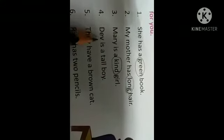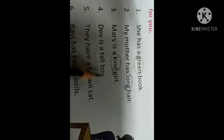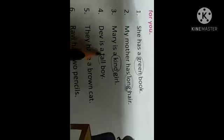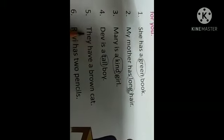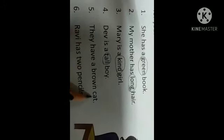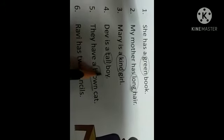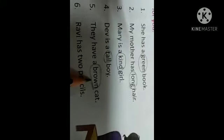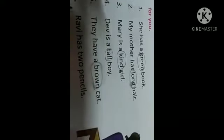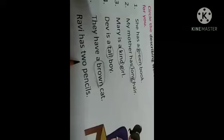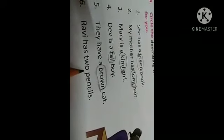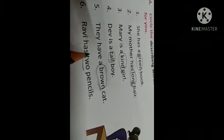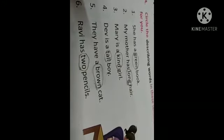Fourth is, they is a tall boy. Tall is a describing word. They have a brown cat. This is an adjective, color. We are giving description of color. Ravi has two pencils. Here, the describing word is in numbers.